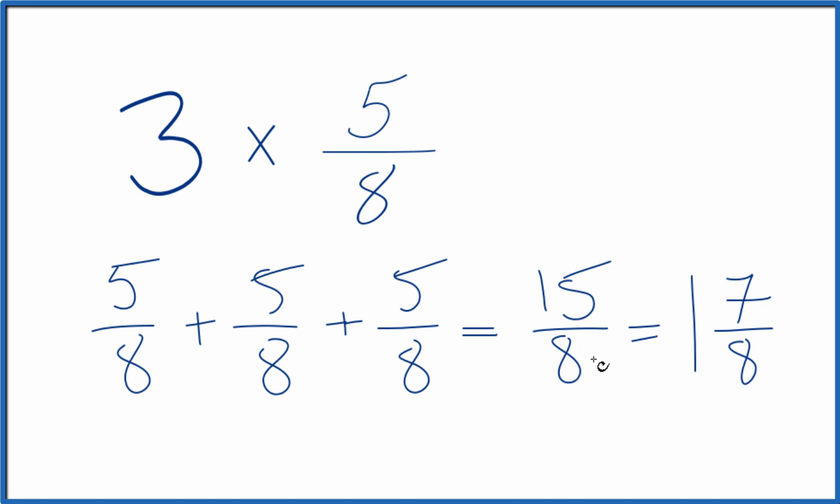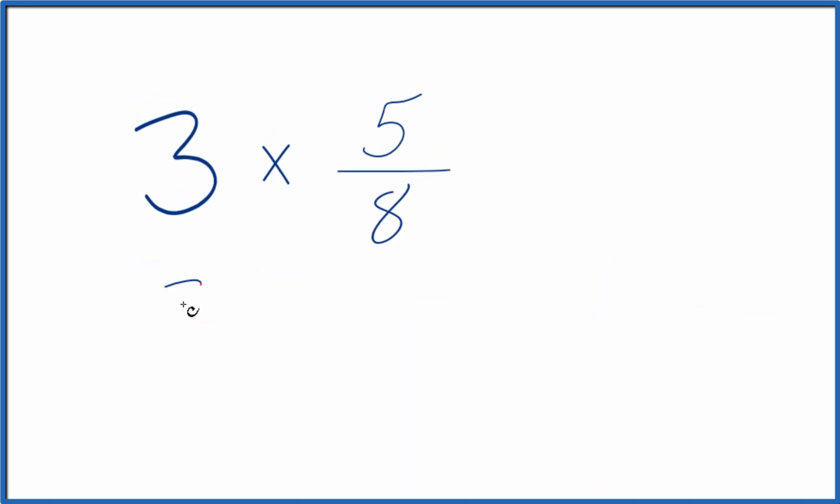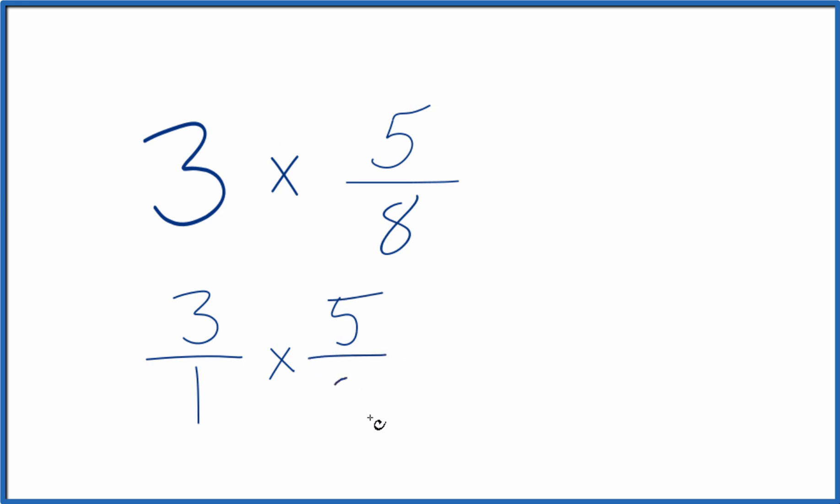There is another way we can do this. We could take 3 and call it 3 over 1. Still 3, which is dividing by 1. Now we have a fraction. We can multiply that fraction times 5 eighths, like this.